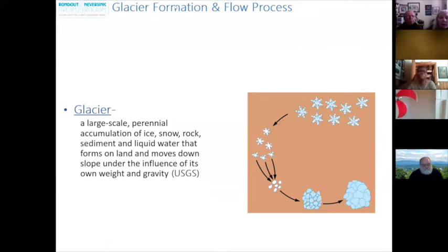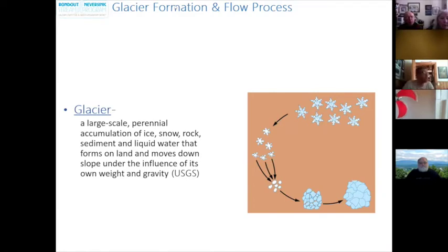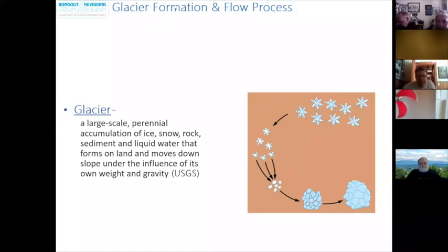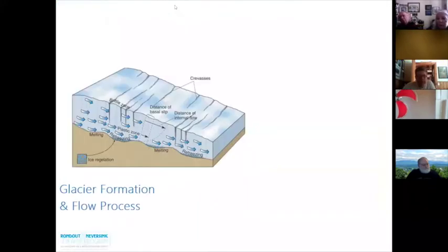The United States Geological Survey defines a glacier as a large-scale perennial accumulation of ice, snow, rock, sediment, and liquid water that forms on land and moves downslope under the influence of its own weight and gravity. Glaciers form through a simple, gradual, long-spanning process. When it snows for a long period of time, snowpack builds up, gets extremely heavy, and puts downward pressure on the underlying snow. Over time, this packs the snow and turns it into ice. As snowpack accumulates, the ice layer gets thicker and a large glacier is formed.